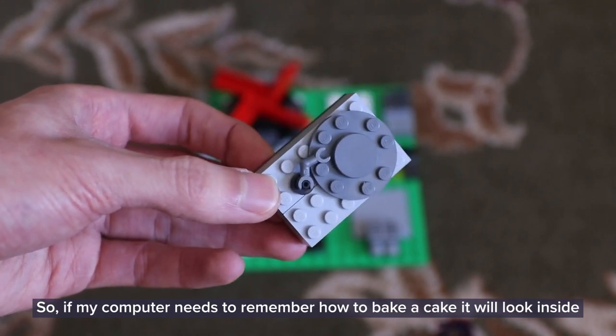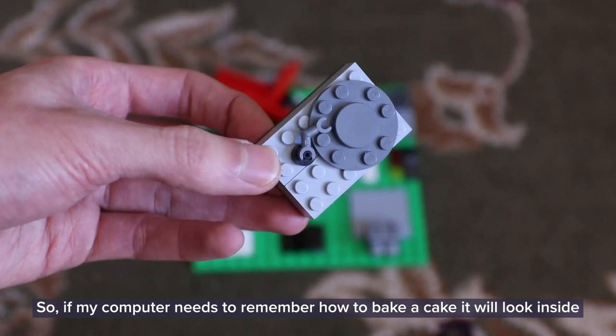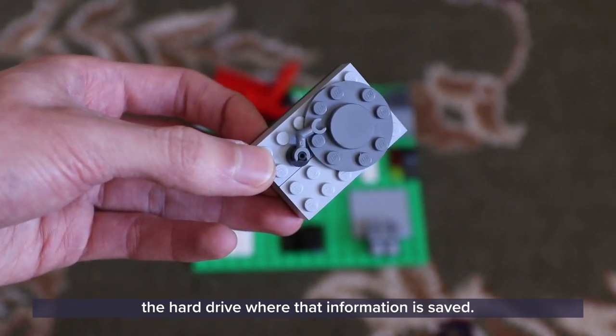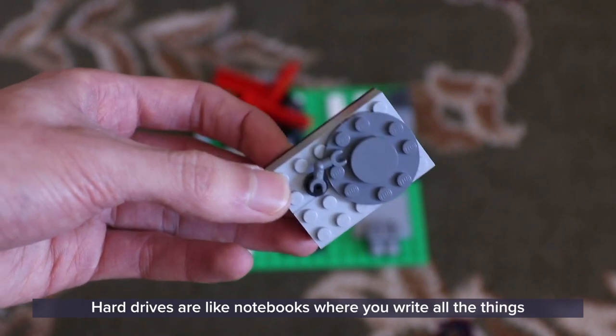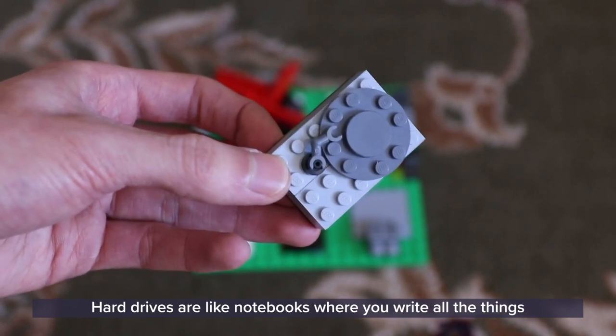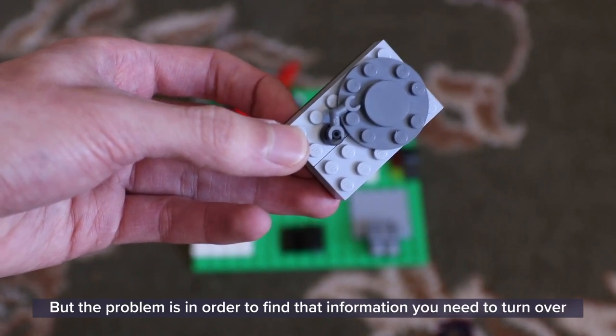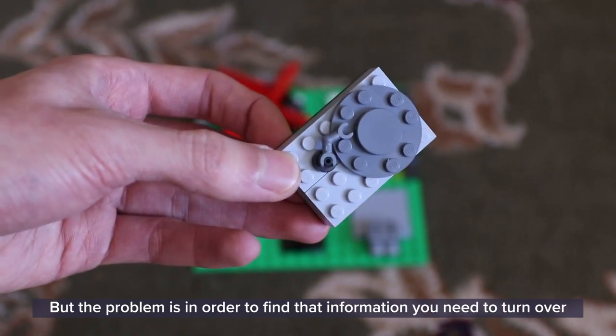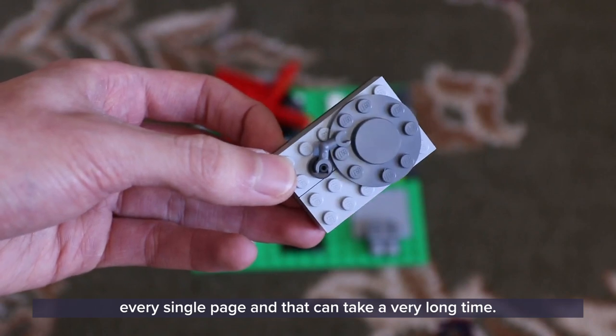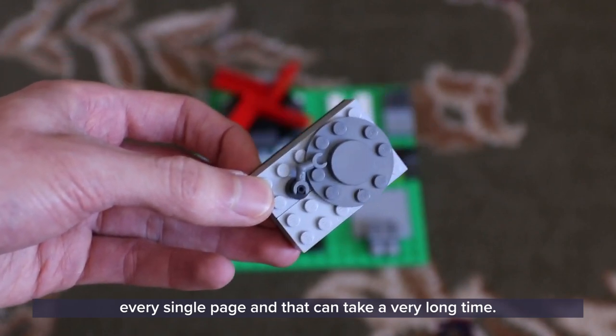So if my computer needs to remember how to bake a cake, it'll look inside the hard drive where that information is saved. Hard drives are like notebooks where you write all the things you want to remember. But the problem is that in order to find that information, you need to turn over every single page and that can take a very long time.